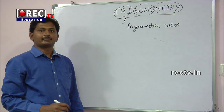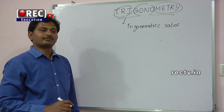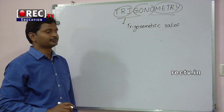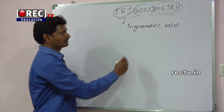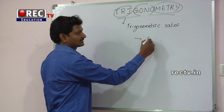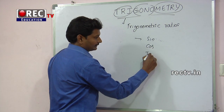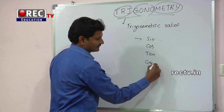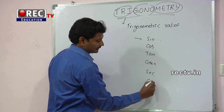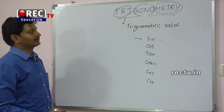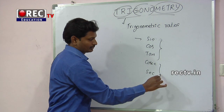Just like in English language we have the alphabets A, B, C, D — in Trigonometry we have six Trigonometric ratios. Those are the basic terms: first one is SIN, next COS, TAN, Cosecant, Secant, and COT. So these are the six Trigonometric ratios.